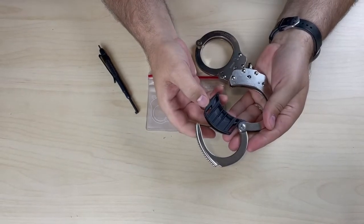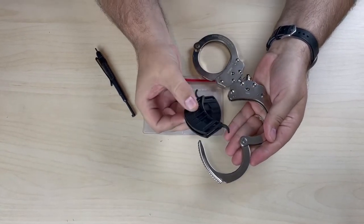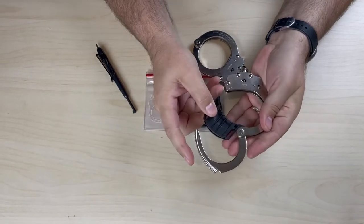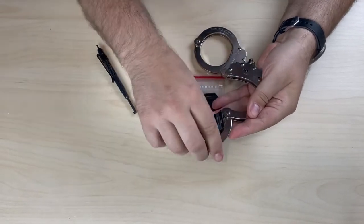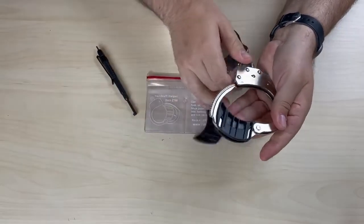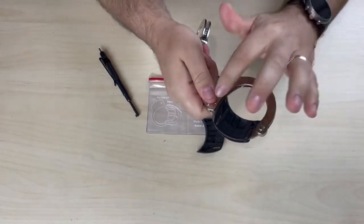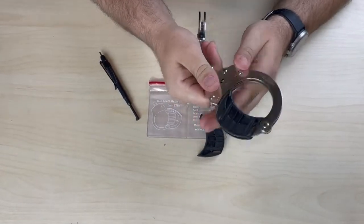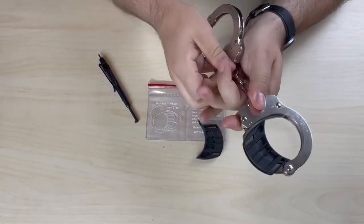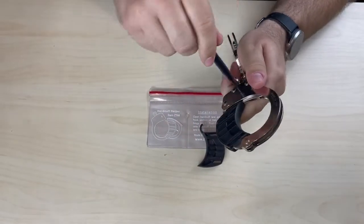To do that, we're going to install the handcuff helper. The way to install it is you're going to take the hook end and put it onto the hinge, and then firmly press against the locking arm. That will reduce the circumference inside the handcuff and give you a smaller space to restrain the person.